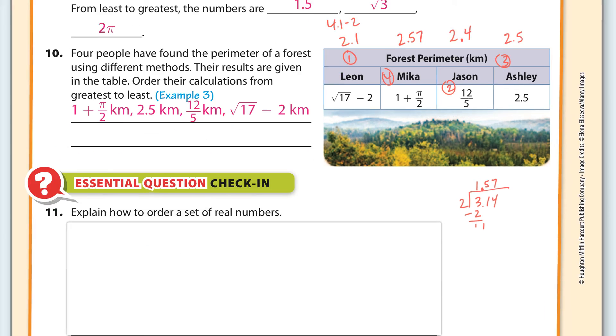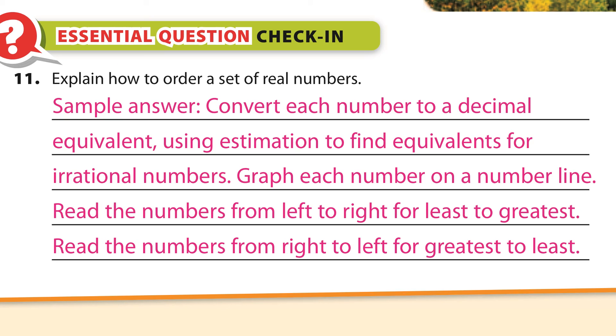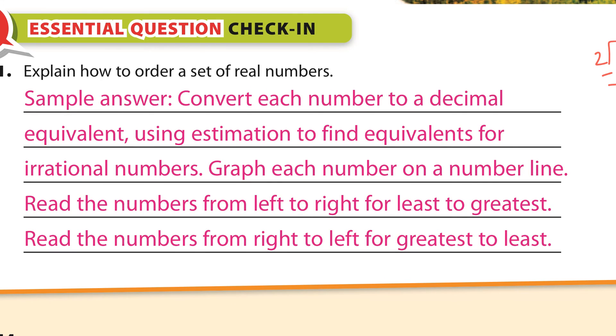So how do you order a set of real numbers? Well, this is what you do. One idea is you can convert each of them to a decimal, which is what I was doing. Using estimation to find the equivalence for rational numbers. And that's what I was doing, approximating square roots. Graph each number on the number line. And we did that earlier. And read the numbers from left to right for least to greatest. Read the numbers from right to left for greatest to least. So these are the ideas that you need to know for lesson 14.3, the guided practice on comparing rational numbers. I hope this has been helpful. Thanks for watching.